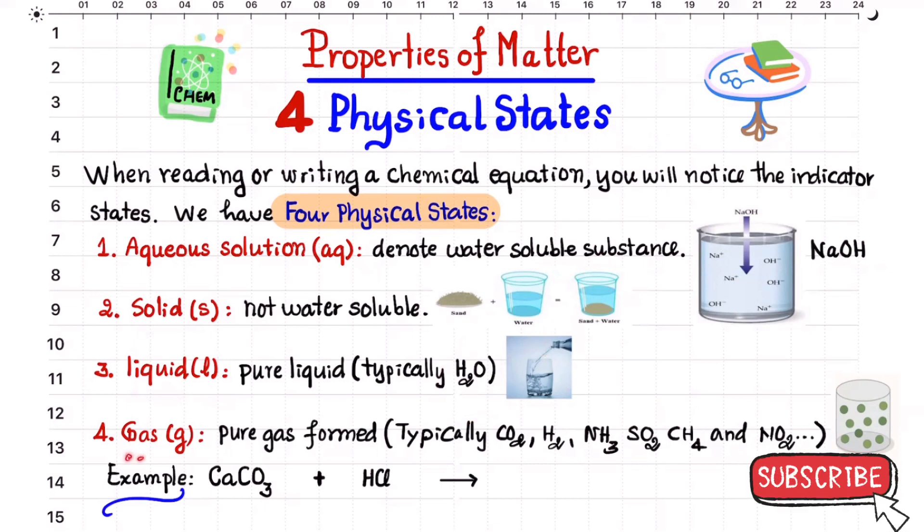The gas is pure gas formed, typically carbon dioxide, hydrogen gas, ammonia, sulfur dioxide, methane and nitrogen dioxide. So this is all gas that evaporates that you cannot see by your eye, so that we have to put letter G, gas.